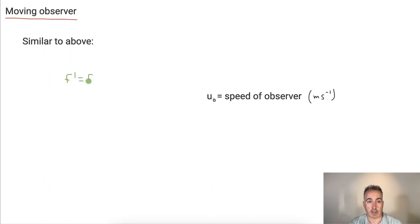So this time the equation goes like this. So F prime equals F times, and this time it goes V plus or minus U_O over V, where V is still the speed of sound. And this time it's your speed of your observer is U_O.